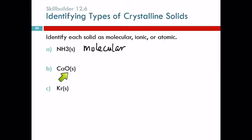How about calcium oxide? What kind of an element is calcium? It's a metal, right? Oxygen is a non-metal. Metal, non-metal, ionic compound, ionic solid.